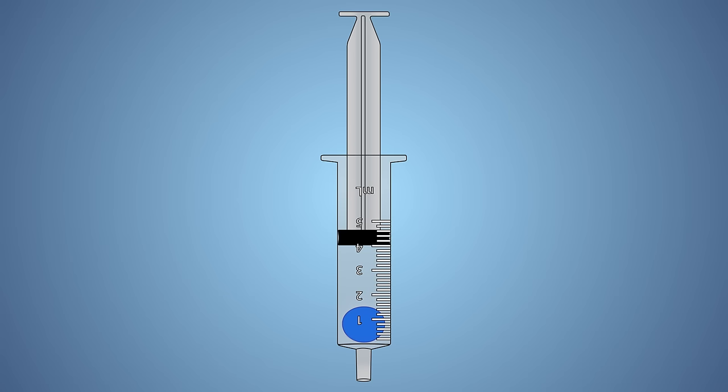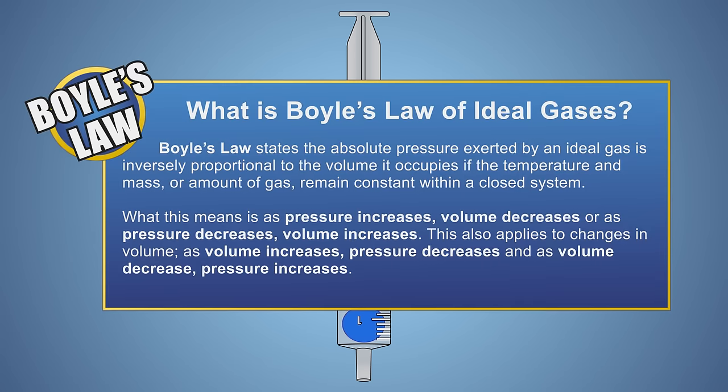Let's look at this experiment a little closer. Boyle's gas law states that when a fixed amount, or mass, of an ideal gas is kept at a constant temperature, and in a closed system, then its pressure and volume are inversely proportional.